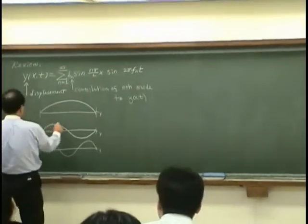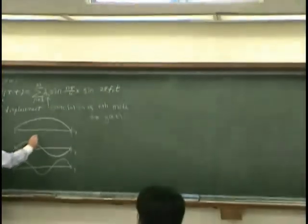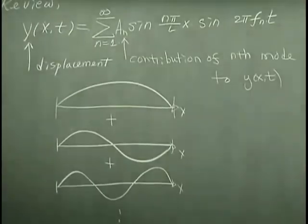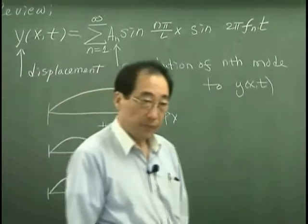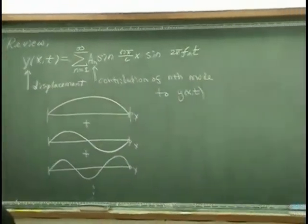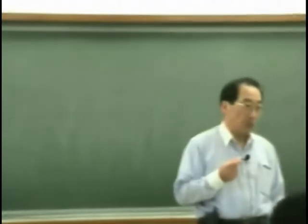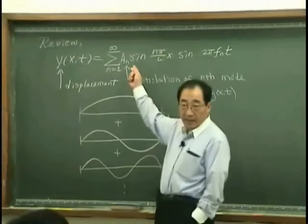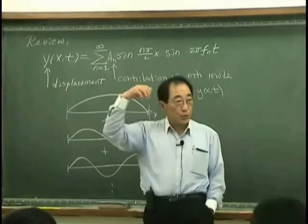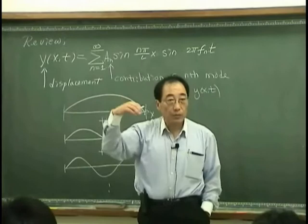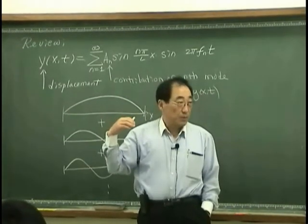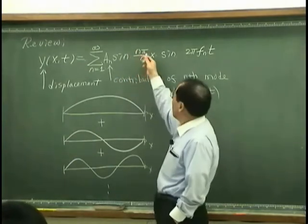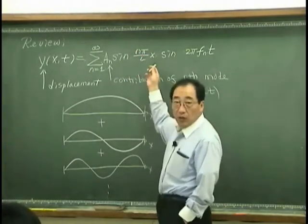So this means that any response can be expressed summing all these things. If you see appendix one, you will find out how to get An. We normally use the property, orthogonal property of normal mode.